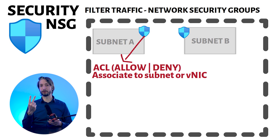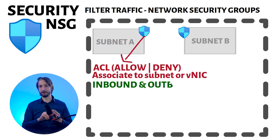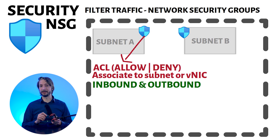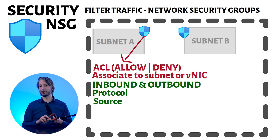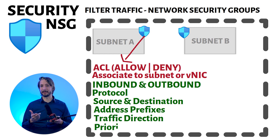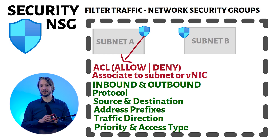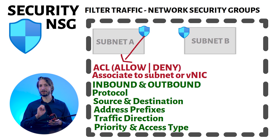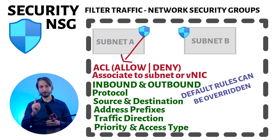NSGs contain two sets of rules: inbound and outbound. The priority for each rule must be unique within each set. Each rule has properties of protocol, source and destination port ranges, address prefixes, direction of traffic, priority, and access type. All NSGs contain a set of default rules. These default rules cannot be deleted, but because they are assigned the lowest priority, they can be overridden by new rules that you create.